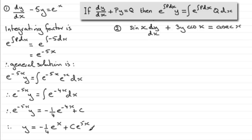So we end up with y equals minus one quarter e to the power x, plus c times e to the power 5x. You could multiply through by 4 if you wanted to, or pull out e to the power x as a common factor. But essentially, that's the general solution. Let's move on to the next example.